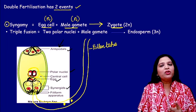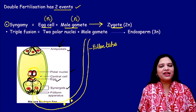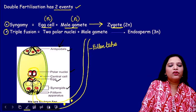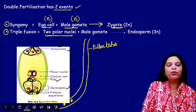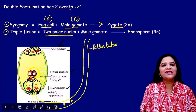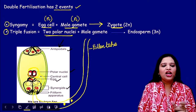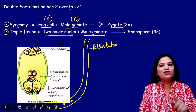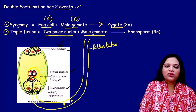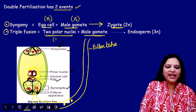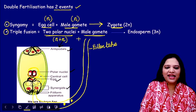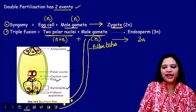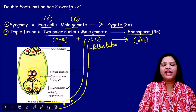What about the second male gamete entering via the pollen tube? It is going to fuse with the two polar nuclei present in the central cell. The two polar nuclei are n + n, and fusing with the incoming male gamete (n) results in a 3n structure — the endosperm.